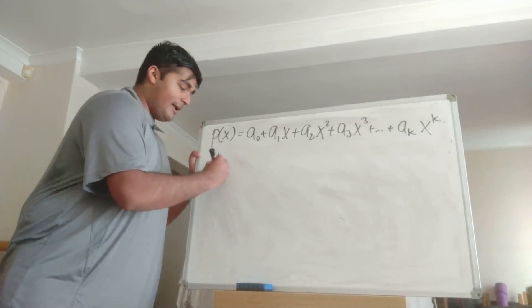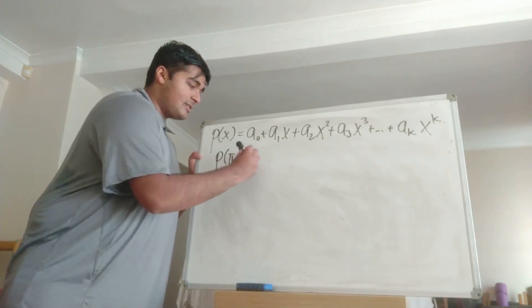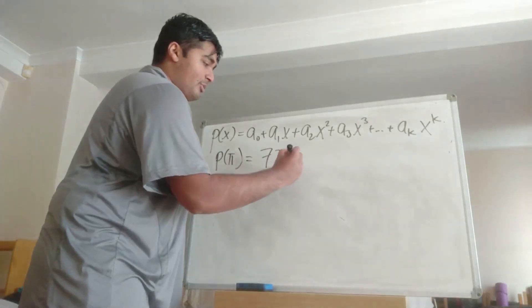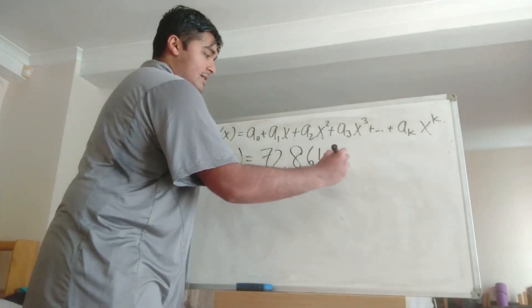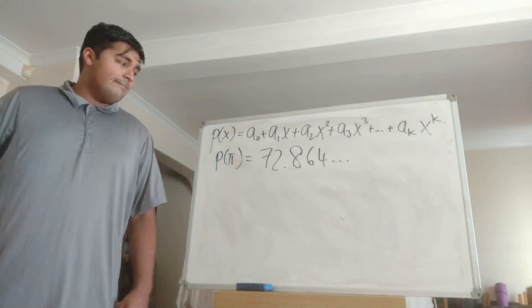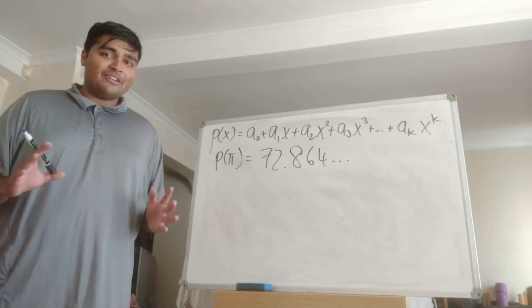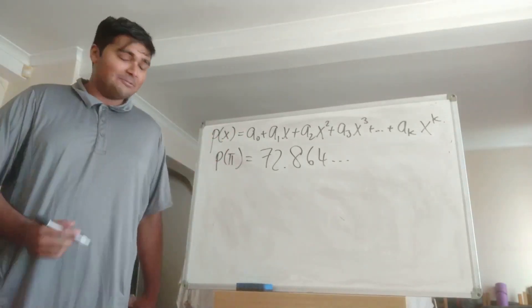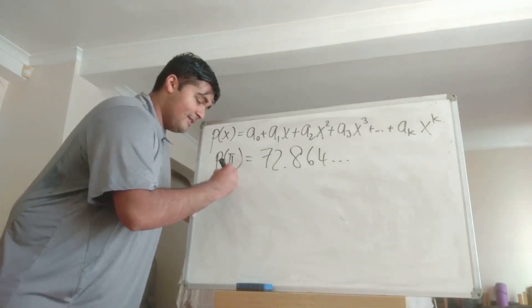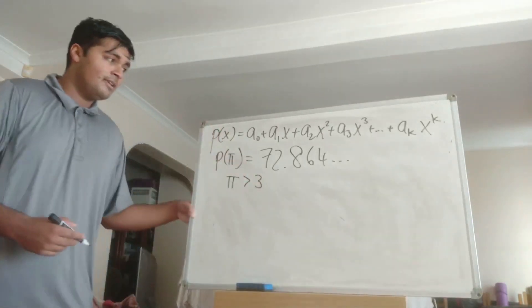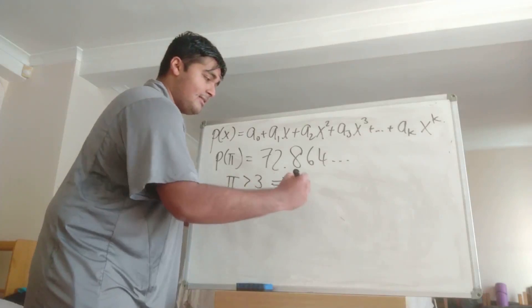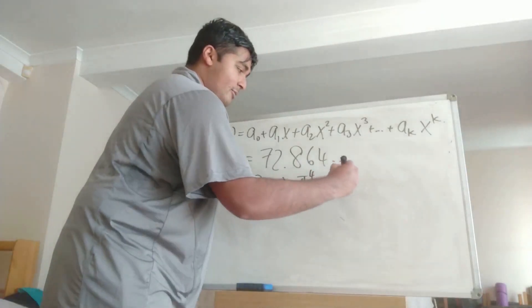So suppose we get P(pi) and let's just suppose it's 72.864 something something something. Well now we can just use a little bit of our knowledge of raising things to powers. We know that pi is bigger than 3, so then that tells us that pi^4 is bigger than 3^4. Now 3^4 is just 81.